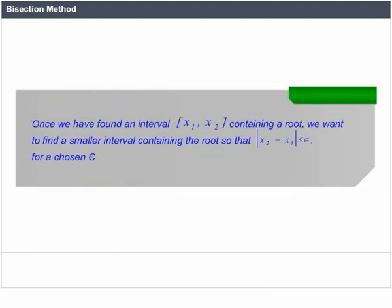Once we have found a closed interval [x1, x2] containing a root, we want to find a smaller interval containing the root such that the modulus of x2 minus x1 is less than or equal to epsilon, for a chosen epsilon.